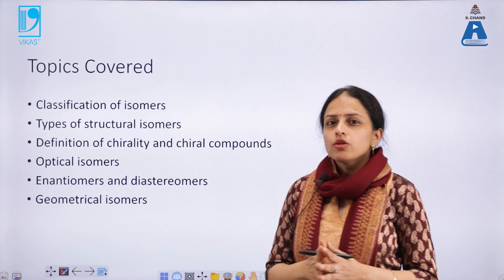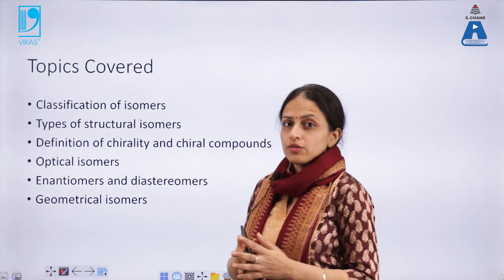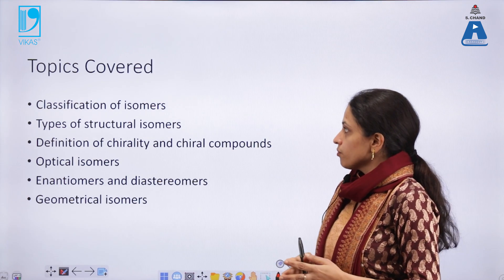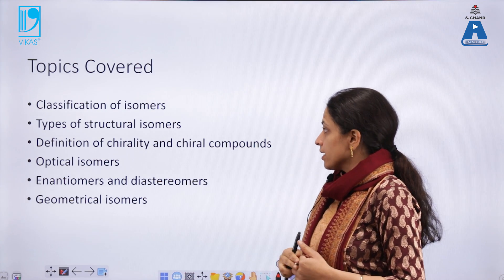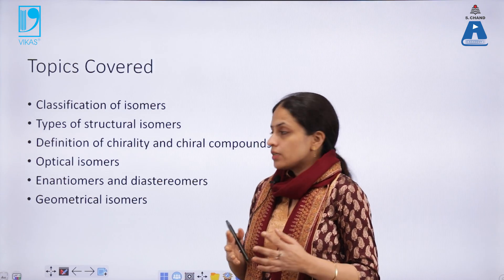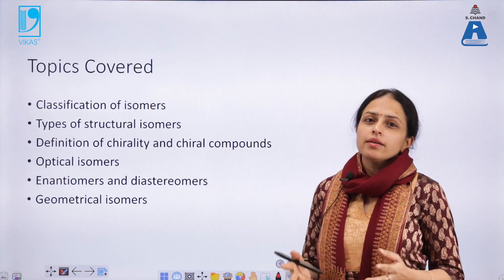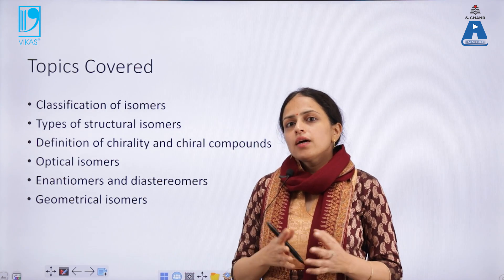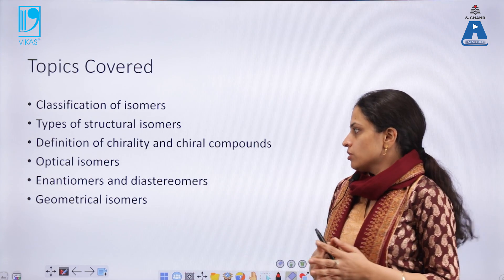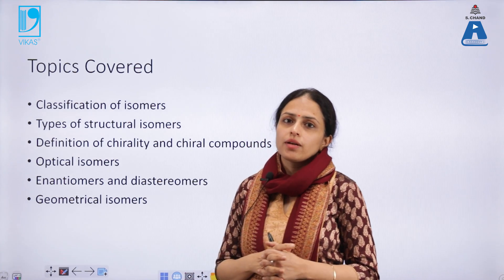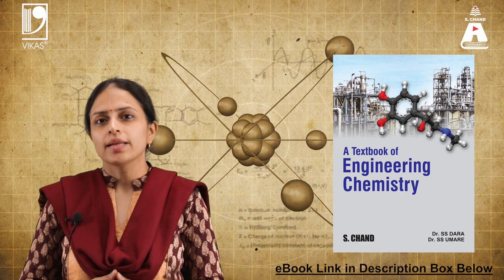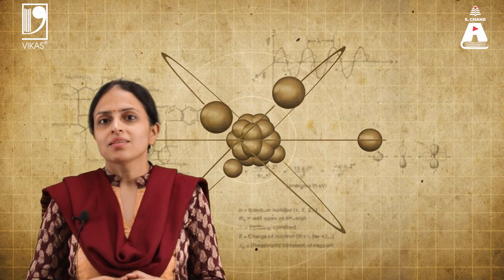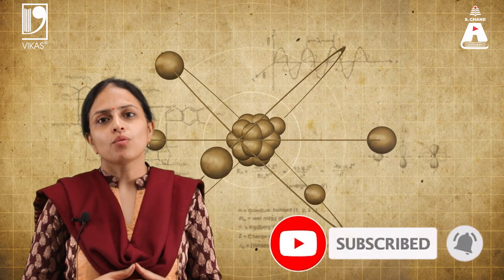So with this, we come to the end of the lecture on stereochemistry Part 2. We have talked about classification of isomers, types of structural isomerism, chirality and achirality, optical isomers, how to distinguish between enantiomers and diastereomers, assigning configuration to chiral carbon atoms through relative and absolute configuration methods, and a brief description of geometrical isomers. For more information on stereochemistry and reaction mechanisms, you can follow our book by S. Chan Publishing. Please keep liking, subscribing, and sharing our channel for more such videos.